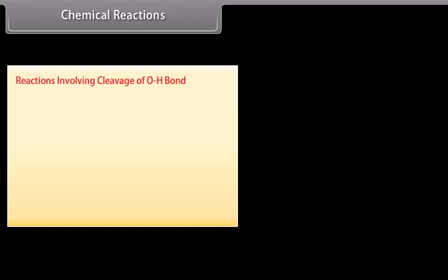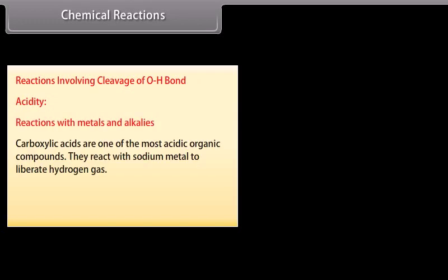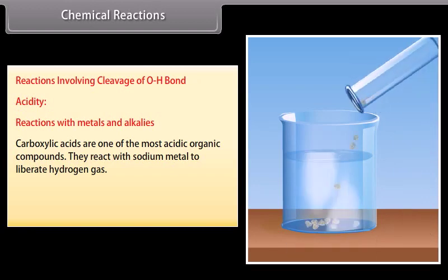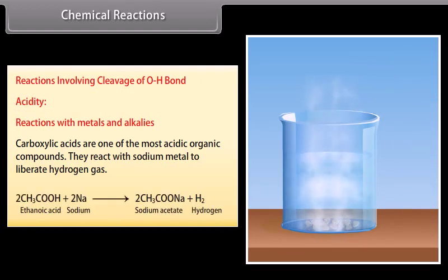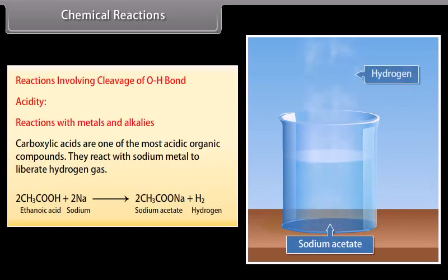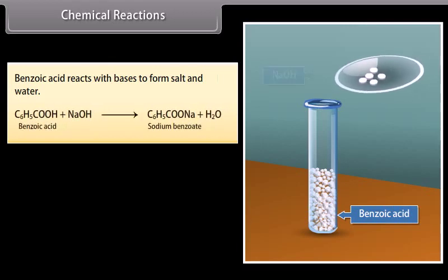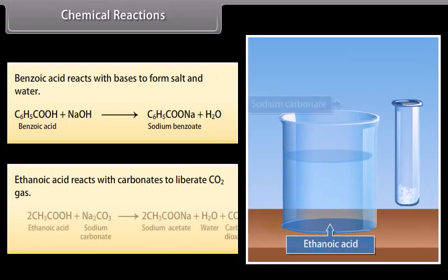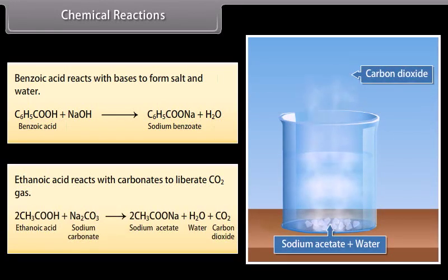Chemical reactions. Reactions involving cleavage of the O-H bond. Acidity - reactions with metals and alkalies: carboxylic acids are one of the most acidic organic compounds. They react with sodium metal to liberate hydrogen gas. Sodium metal reacts with ethanoic acid to give sodium acetate and liberates hydrogen gas. Benzoic acid reacts with bases to form salt and water. Ethanoic acid reacts with carbonates to liberate carbon dioxide gas.